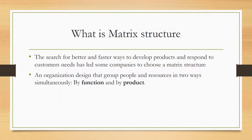Next is the matrix structure. The search for better and faster ways to develop products and respond to customer needs has led some companies to choose a matrix structure — an organizational design that groups people and resources in two ways simultaneously: by function and by product. Over time, customer needs are changing, and if you want to quickly respond to your company's competitive needs and provide products quickly, you can adopt the matrix structure, taking both functions and products together.